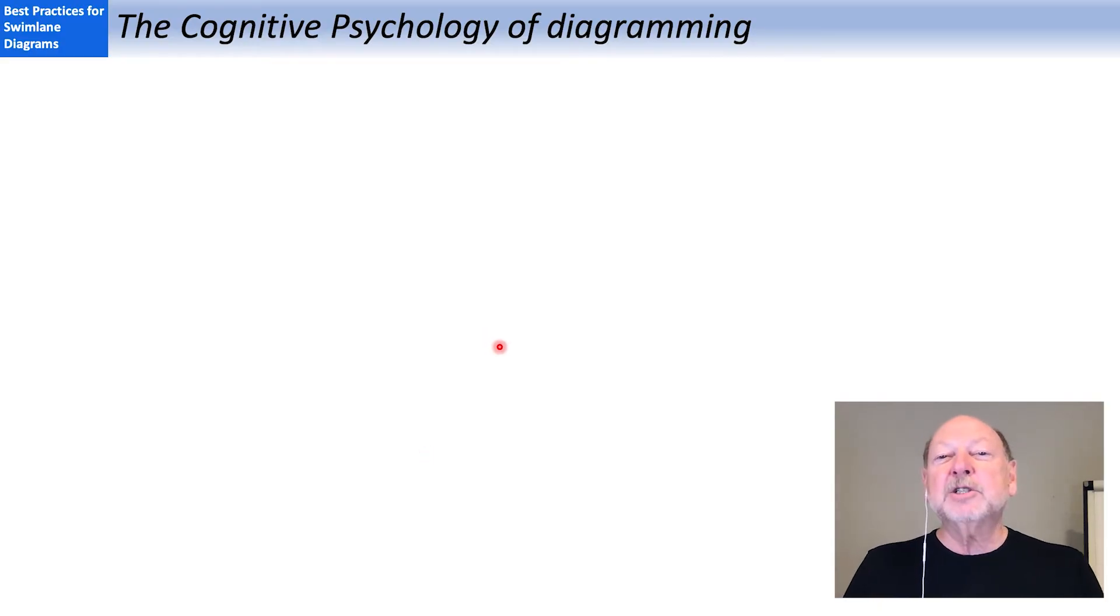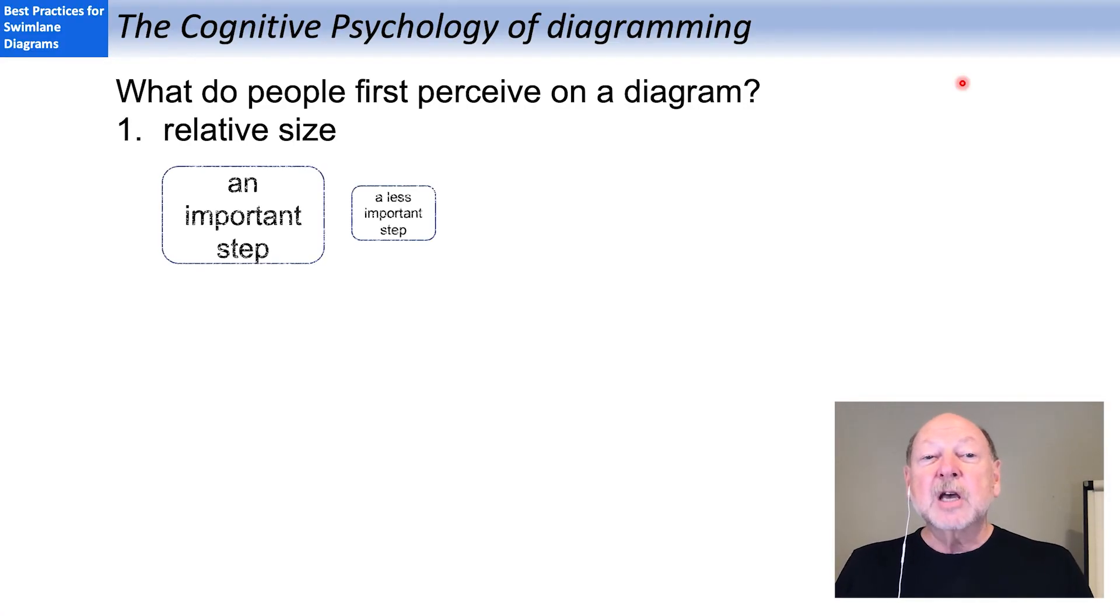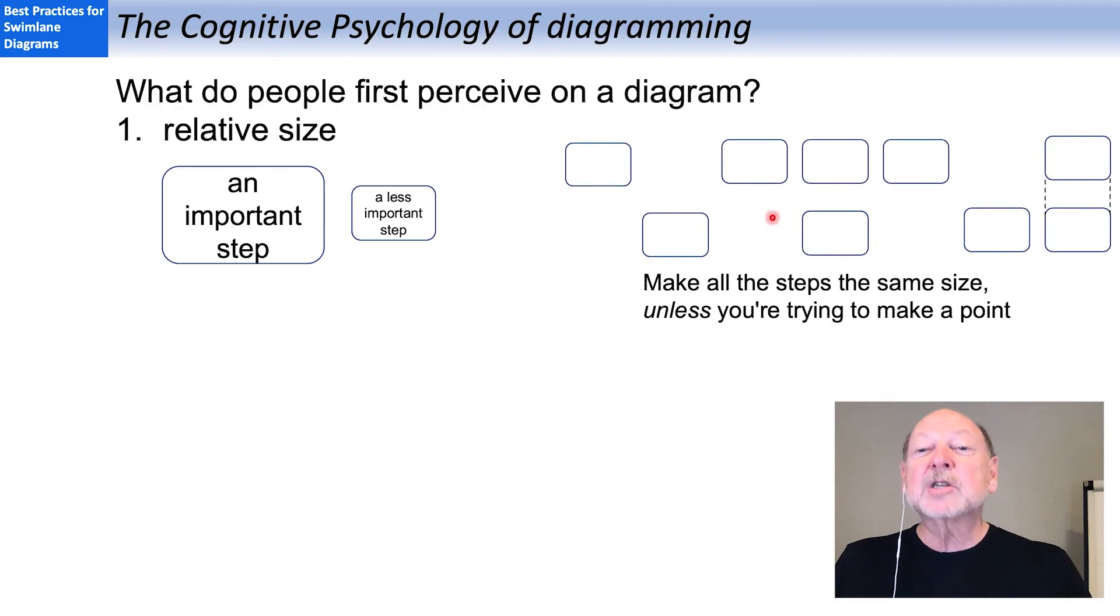And that ties in with how we perceive diagrams, the cognitive psychology of diagramming, if you want. And I saw a great presentation a few years ago where the speaker explained to us what cognitive psychologists have learned about what people perceive initially when they see a diagram, any kind of diagram. And the first thing people notice is relative size. So a larger symbol is seen as more important than a smaller symbol. So my advice: keep them all the same size unless you're trying to make a particular point.